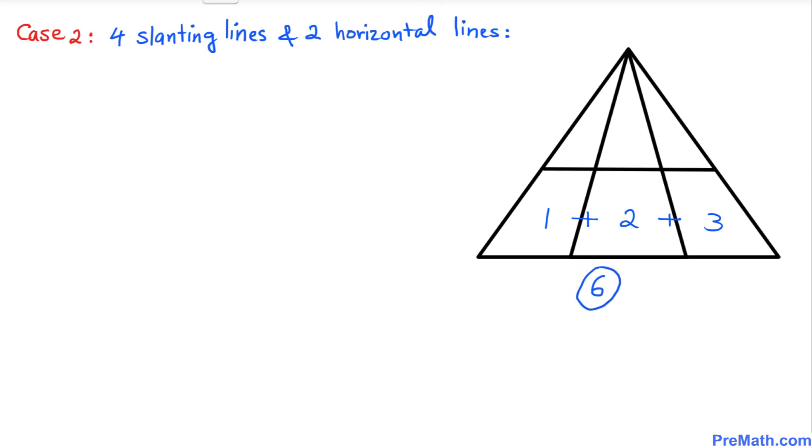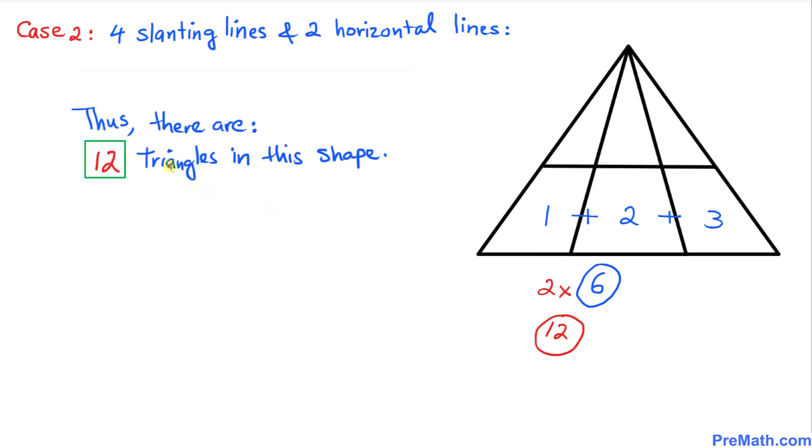Now let's look at how many horizontal lines are there. We have two horizontal lines. We are going to multiply this number by two. Two times six is twelve. Thus there are twelve triangles in this given shape.